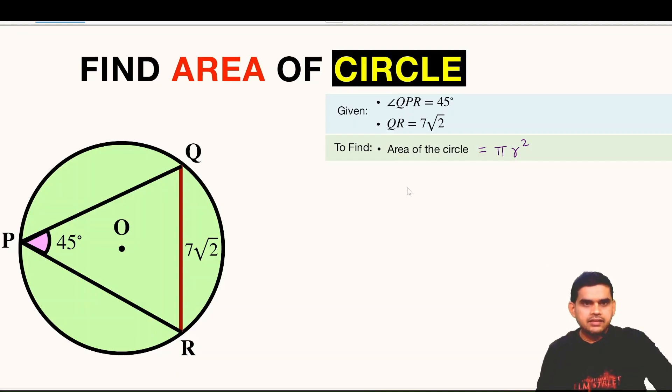For that let us connect these two points O and Q. So this will act as the radius r. Likewise we can connect O and capital R also. This will be small r the radius of the circle.